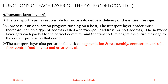Segmentation and reassembly: a message is divided into transmittable segments, with each segment containing a sequence number. These numbers enable the Transport layer to reassemble the message correctly upon arriving at the destination, and to identify and replace packets that were lost in transmission.